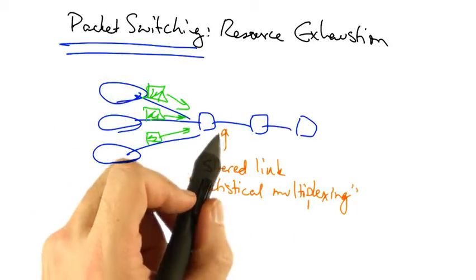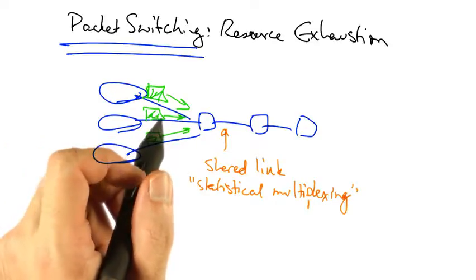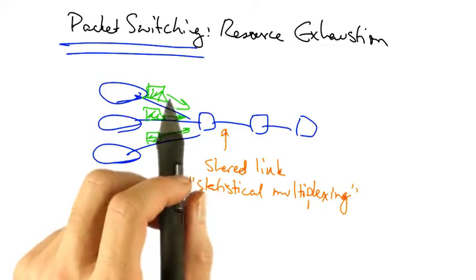In a packet switch network, a link may be shared by multiple senders at any given time using statistical multiplexing, as we learned in previous lessons.